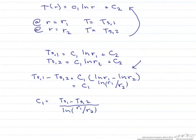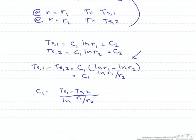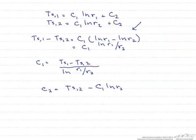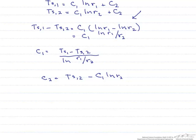Now we have our c1. Now we need to find our c2. The easiest way to do that is to take one of our equations now that we have our c1. We'll use the second one such that c2 equals Ts,2 minus c1 ln(r2). When we put these all together,